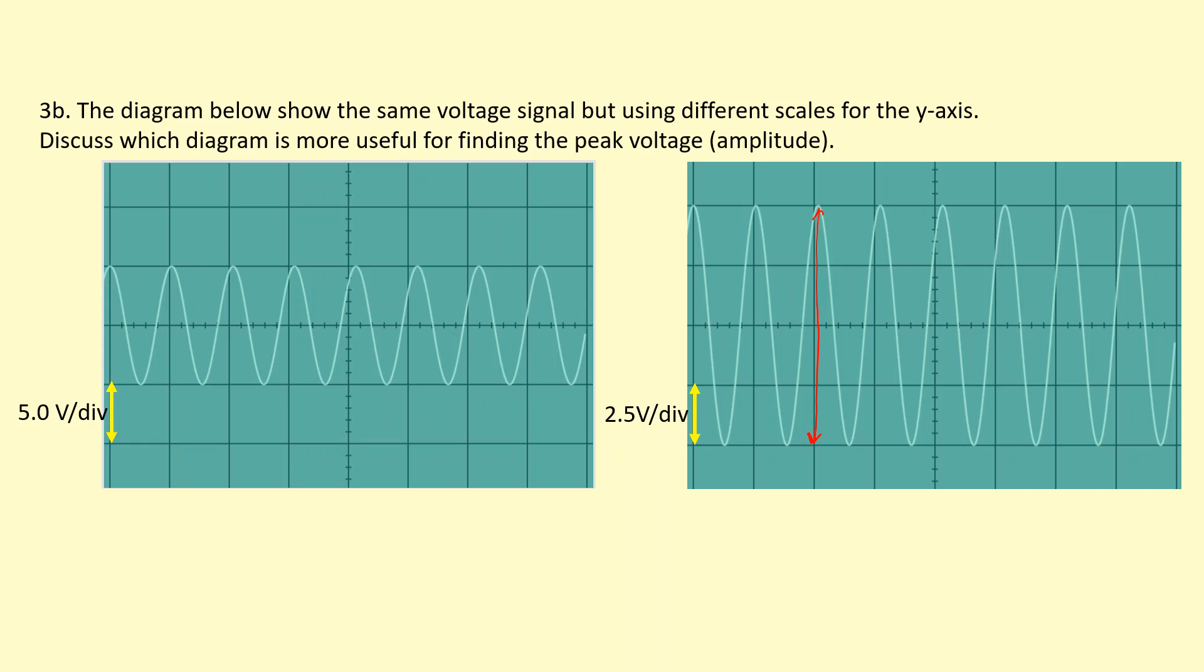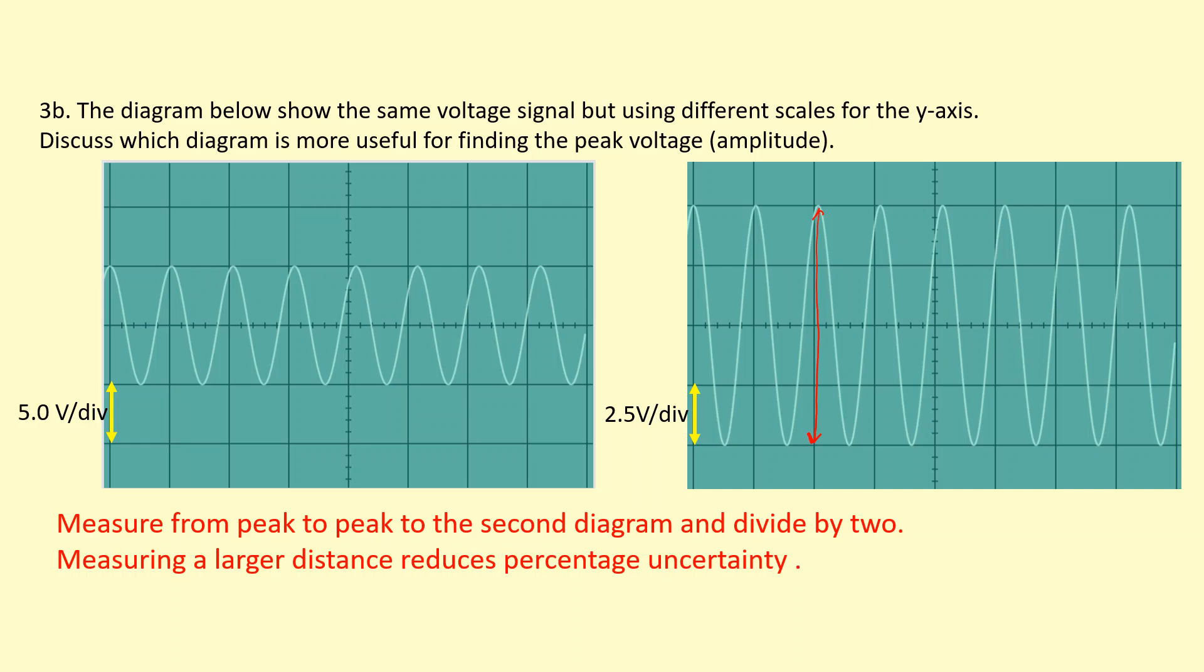Because again, the larger the reading you take, the smaller the percentage uncertainty. So measure from peak to peak, and divide that by two, and the larger distance reduces the percentage uncertainty.